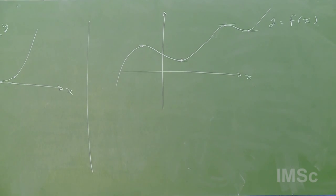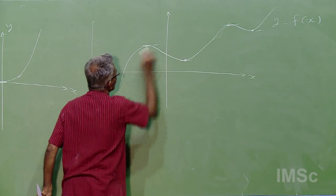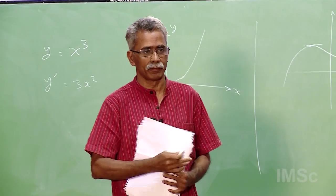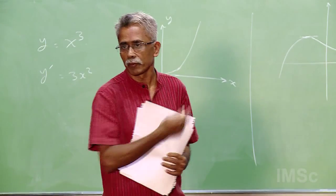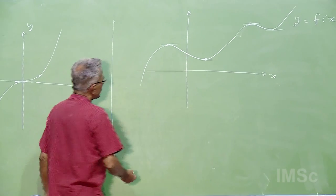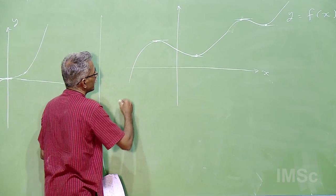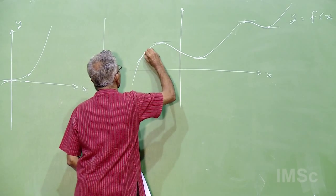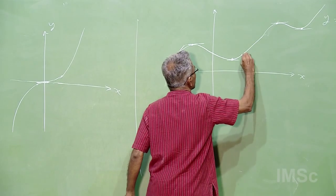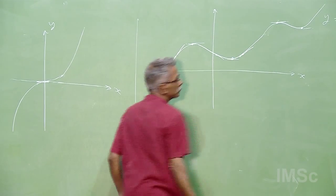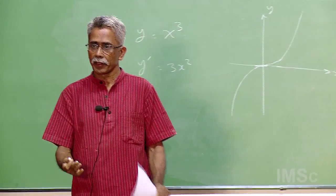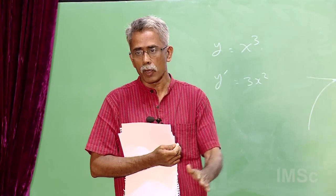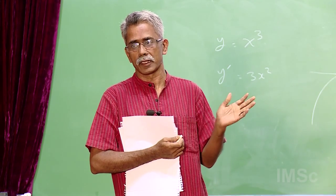Pictorially, what is the second derivative telling you — assuming the function is twice differentiable? You draw the graph of the function, take any point, and draw a tangent on it. The second derivative tells you whether the part of the graph close to the point of tangency is above or below the tangent.